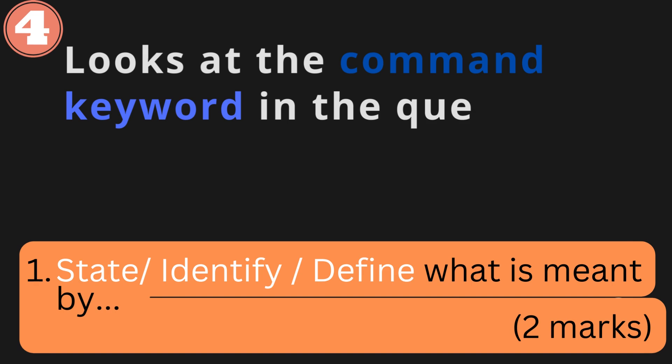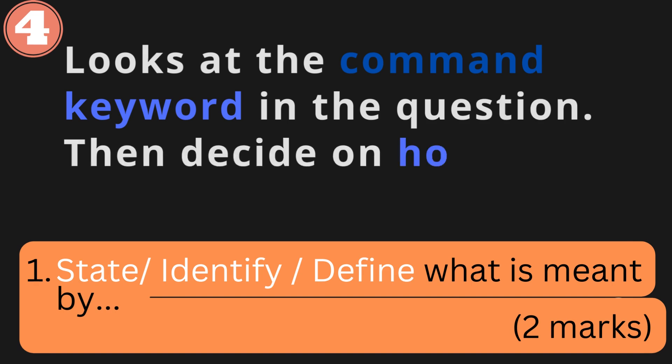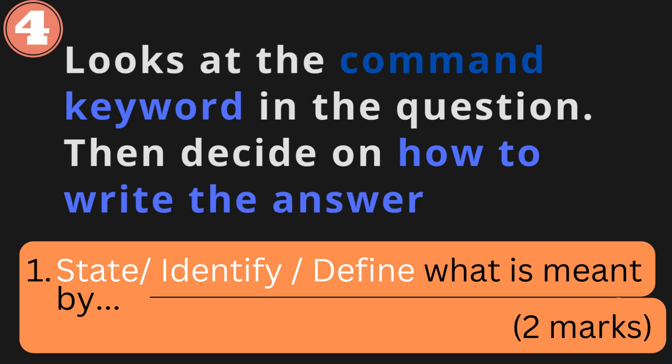Number four: first look at the command word in the question — for example, 'state,' 'identify,' or 'define.' Then look at the marks allocated; two marks means you need to cover two points. When the paper uses command words such as state, identify, or define, they don't expect you to write in detail — these are short answer questions. Don't waste time elaborating or writing in detail for these sorts of questions.